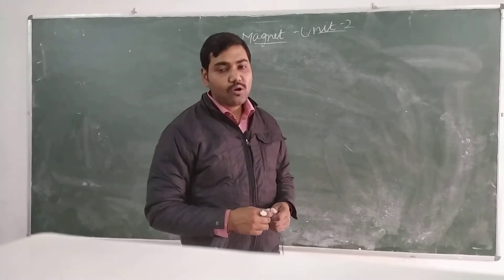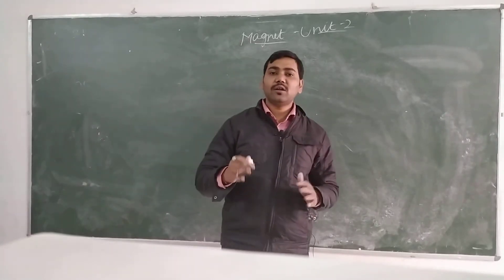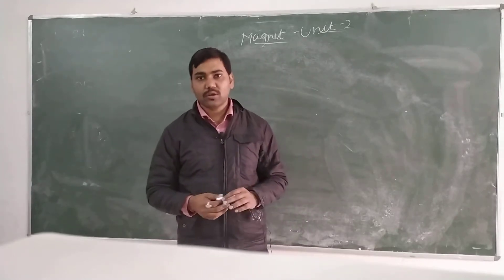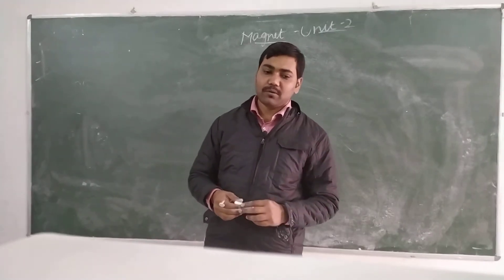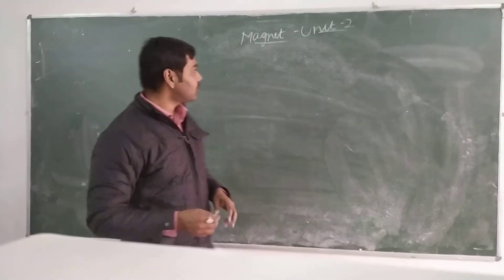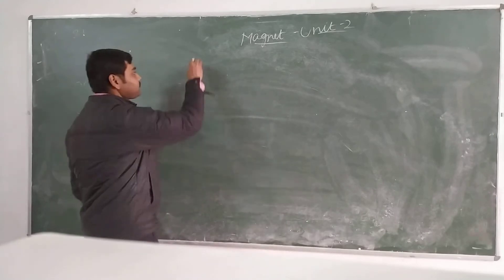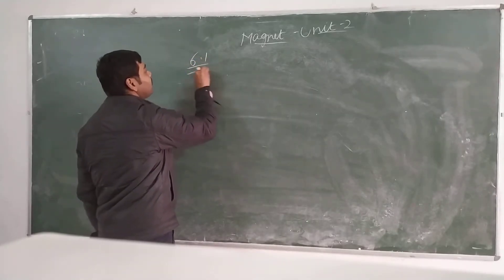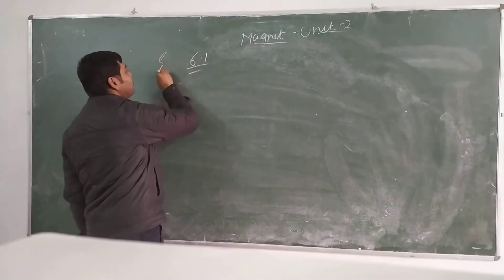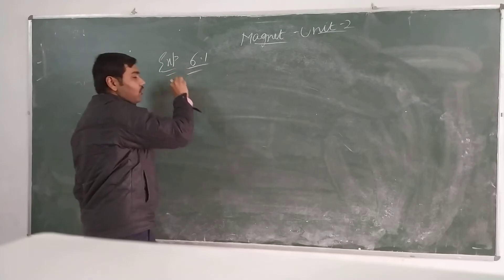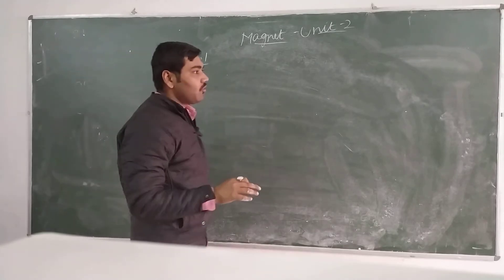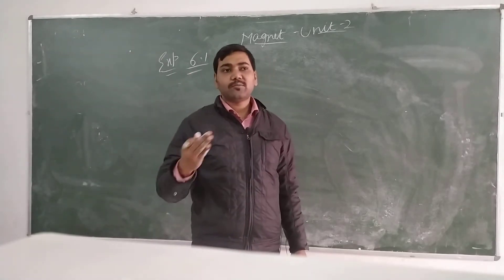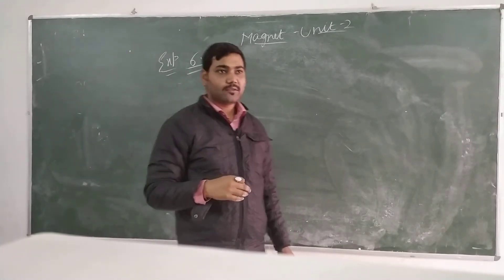In Unit 2 we have to study about a few experiments. We will begin with a few experiments. Investigation 6.1 is based on identifying magnetic substances and non-magnetic substances.